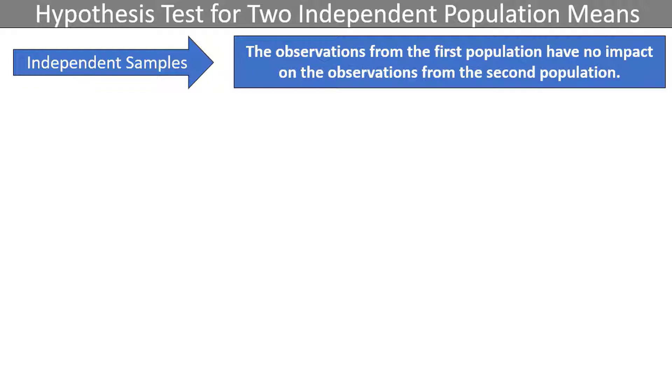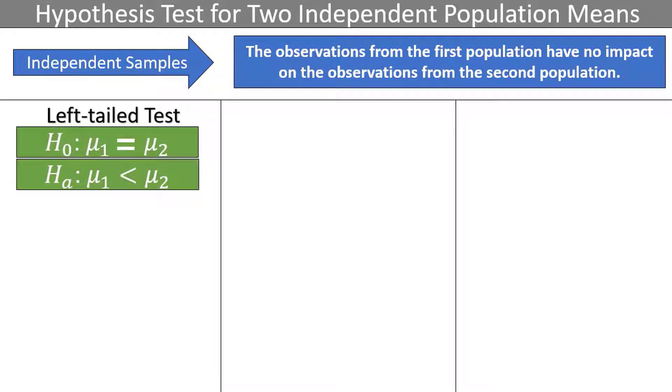The goal of the two-sample mean test is to determine if the mean of population 1 is greater than, less than, or different from the mean of population 2. For a left-tailed test, we believe the first population mean is smaller than the second, indicated by a less than sign in the alternative hypothesis, and the p-value will be in the left tail of the distribution.